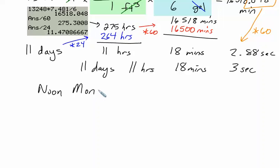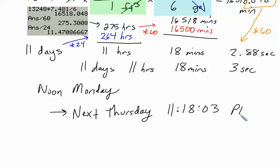So if it starts at noon on Monday, well, it would be the next Monday, not quite two weeks, so it would be the next Monday, and then that would be, so let's just count. Tuesday, Wednesday, Thursday, Friday, Saturday, Sunday, there's seven days. Monday is 8, Tuesday is 9, Wednesday 10, Thursday 11. So it's going to be the next Thursday. 11 hours later would be 11, 18, 03 p.m.